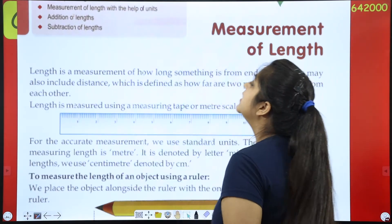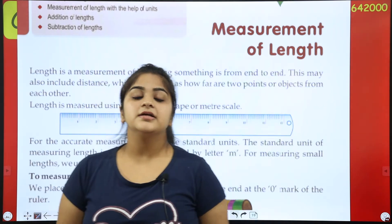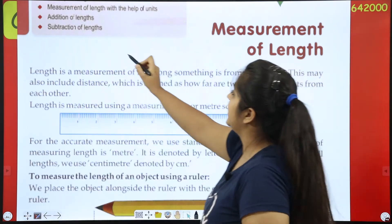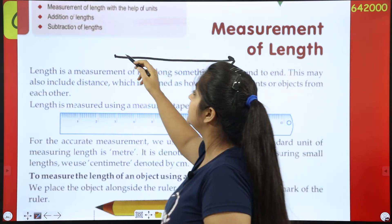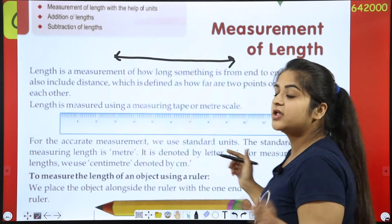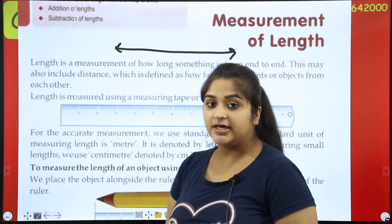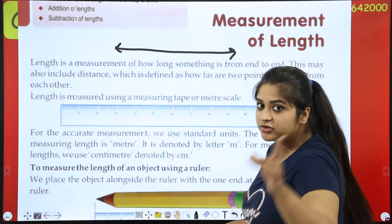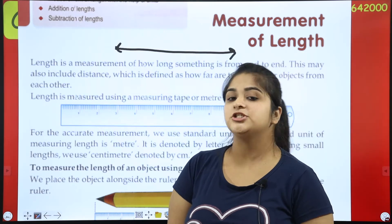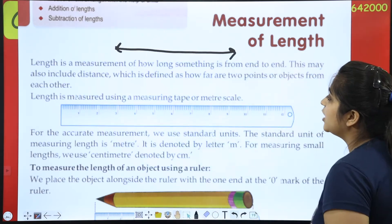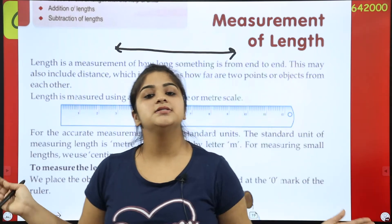First of all, we will read a little chapter. Length is a measurement of how long something is from end to end. Measurement of length is what happens? If we want to see the length of one end to the other end, what length is the length? The length of one end to the other end is the length. This may also include distance. It is a distance. There is a path to the other end, the length of the map. It can also be the length of the map, which is defined as how far are two points or objects from each other, which tells us how much distance it is from one point to the other point.